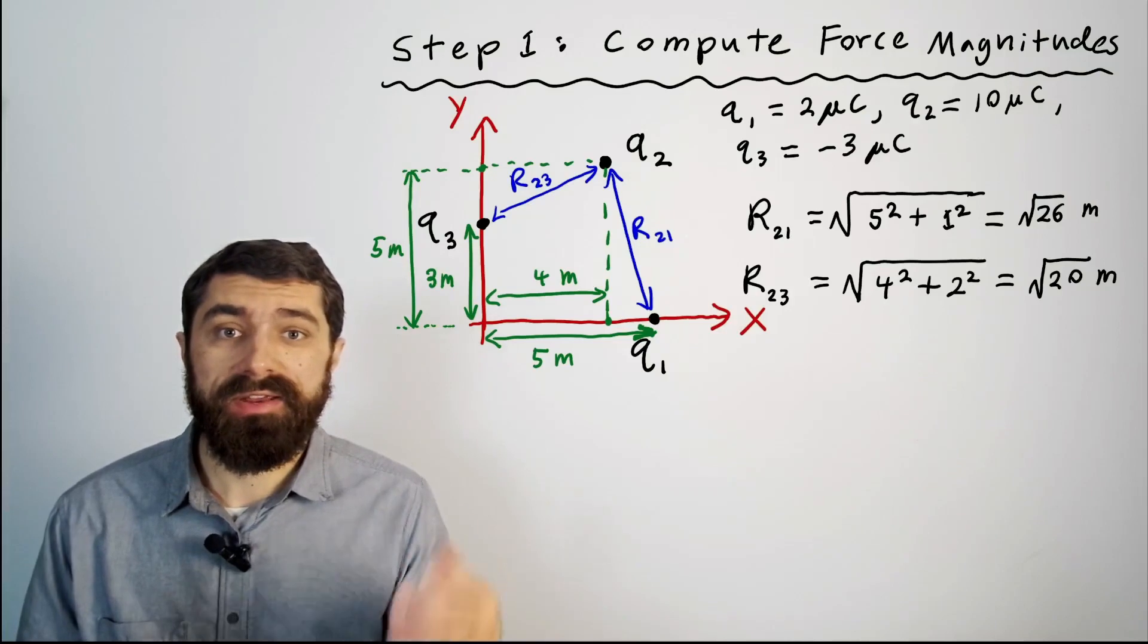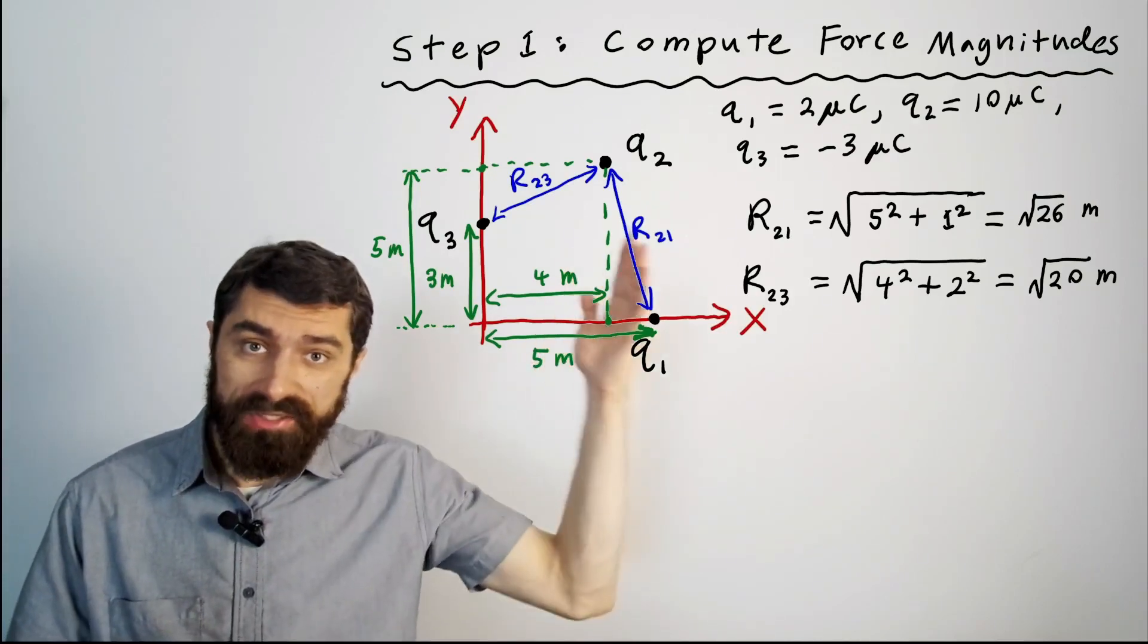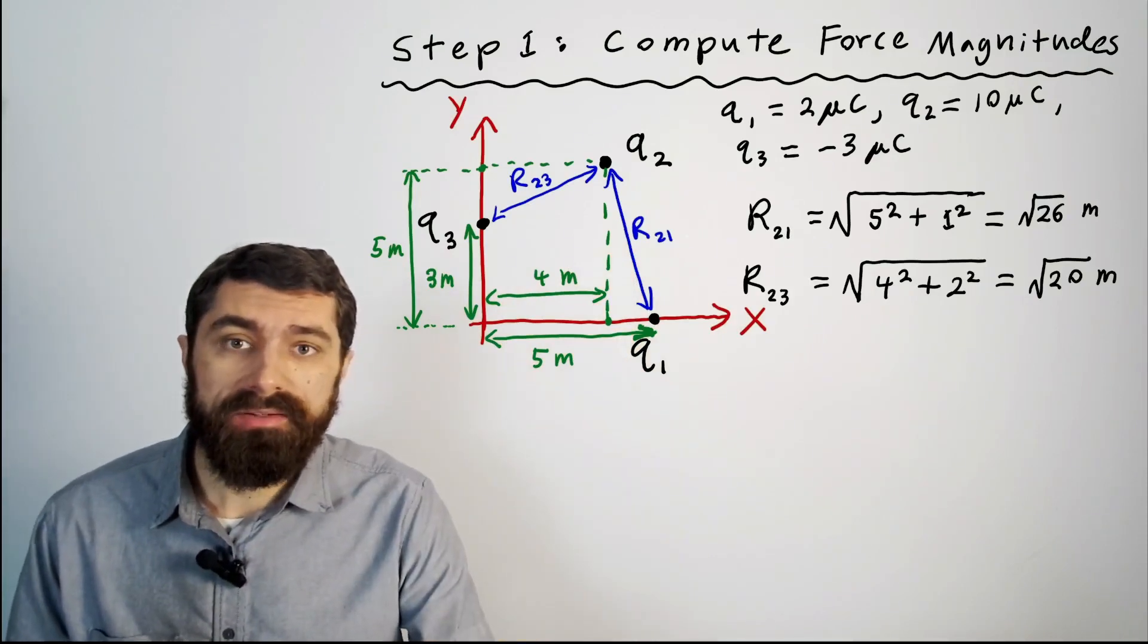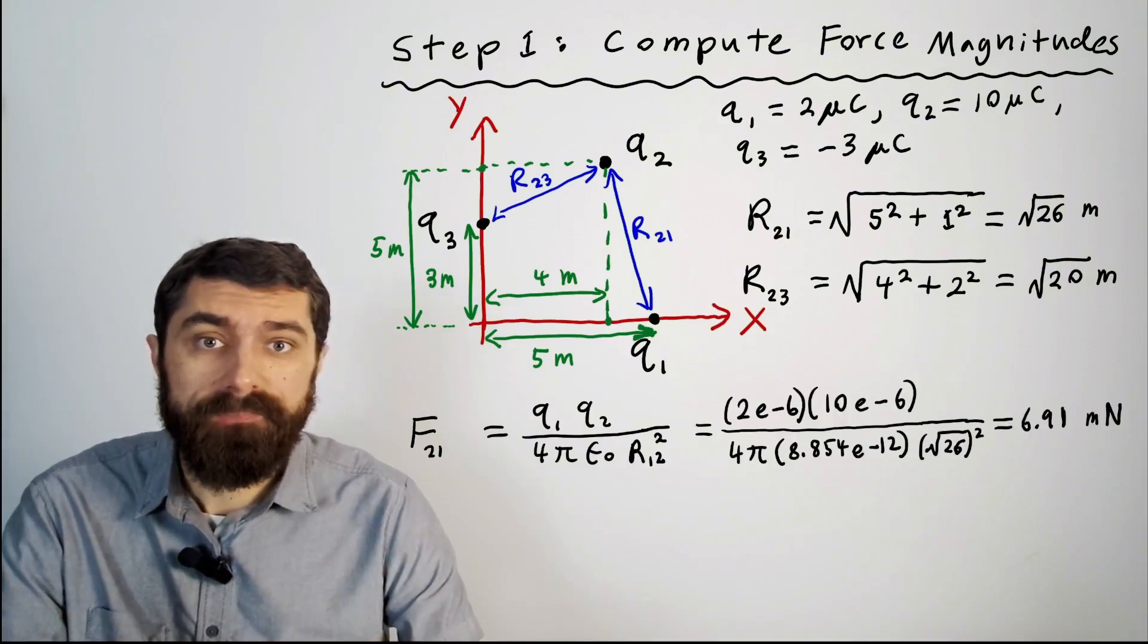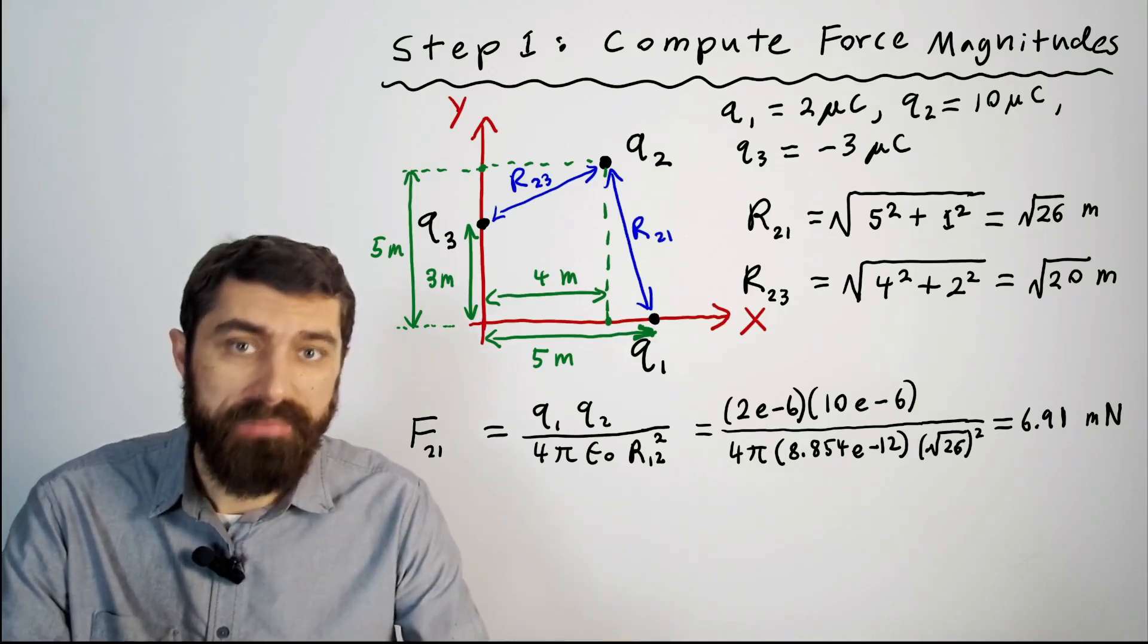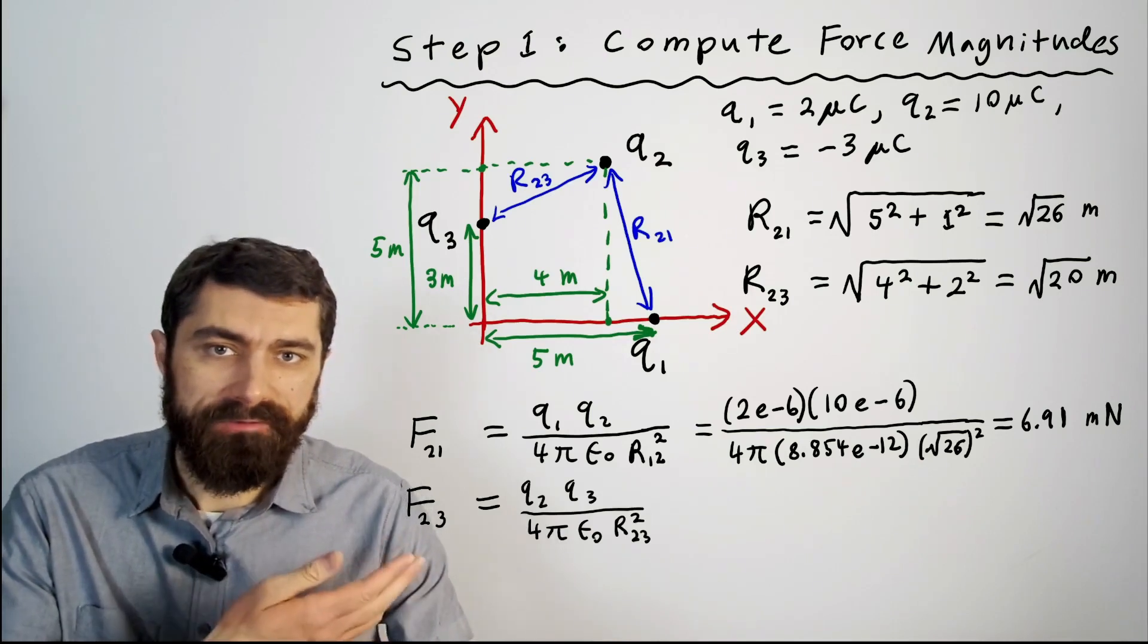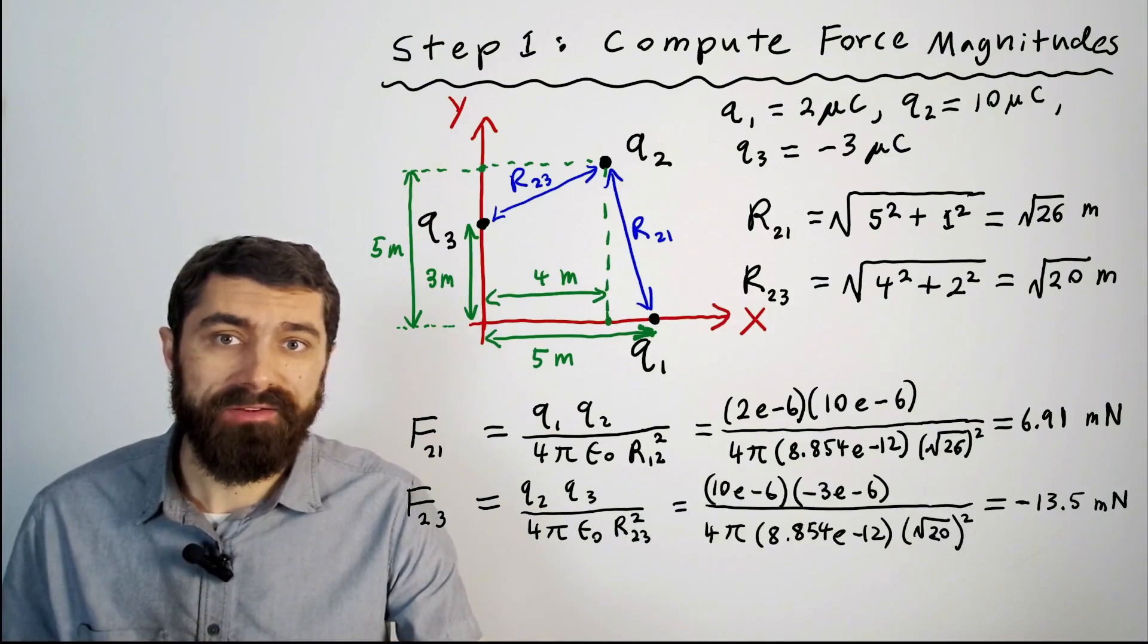The next step is to then use these distances that we calculated to compute the individual forces due to q3 and q1. And that simply is basically just plug and chug with Coulomb's law. So I basically just plug in those values that we were given and I get a value of 6.91 millinewtons for f21. And in a similar way we can calculate f23 plug and chug I get minus 13.5 millinewtons.